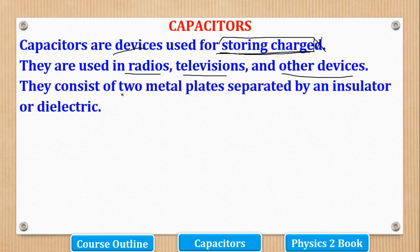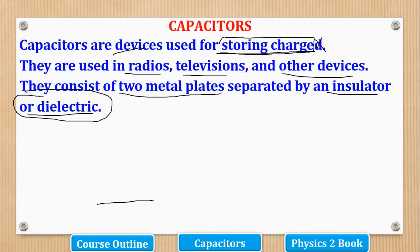And here they consist of two metal plates separated by an insulator called a dielectric. So I think you saw in the part of calculations, the last part was about dielectric. So that's why I shall concentrate more on what a dielectric is. But for now, just know that it is an insulator.